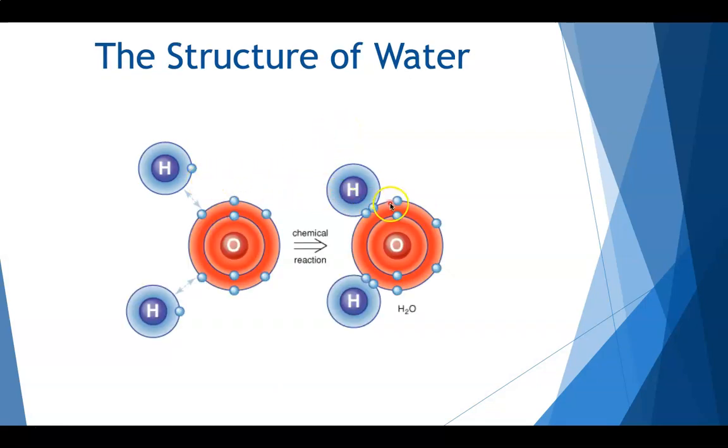Once water begins to form, this forms a bond in which we share the electron. So you see the electron from the hydrogen paired with the electron from the oxygen is going to create this bond. Remember, when we share electrons, this is called a covalent bond. So water is going to actually be a covalent bond between the oxygen molecules and the hydrogen molecules.